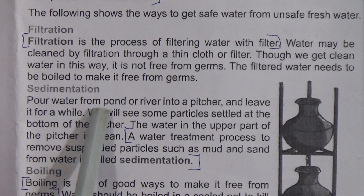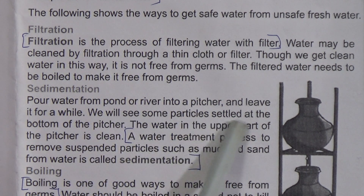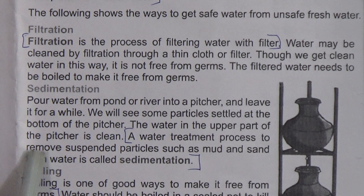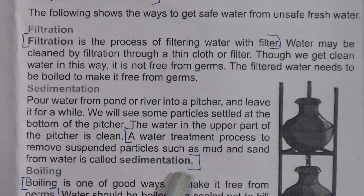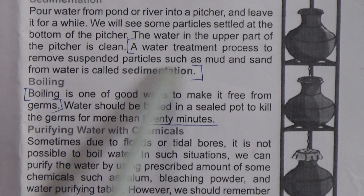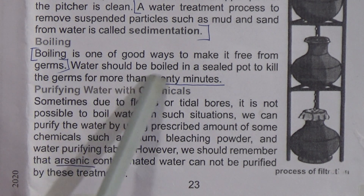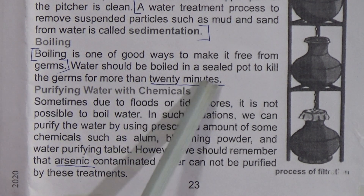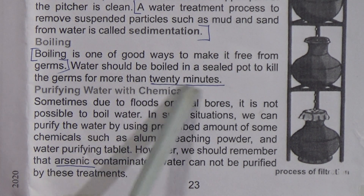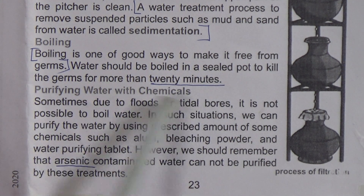Sedimentation: pour water from a pond or river into a pitcher and leave it for a while. You will see some particles settle at the bottom of the pitcher. The water in the upper part of the pitcher is clean. The removal of suspended particles such as mud and sand from water is called sedimentation. Boiling is one of the best ways to make water free from germs. Water should be boiled in a sealed pot to kill germs for more than 20 minutes. This is important for fill-in-the-blanks.